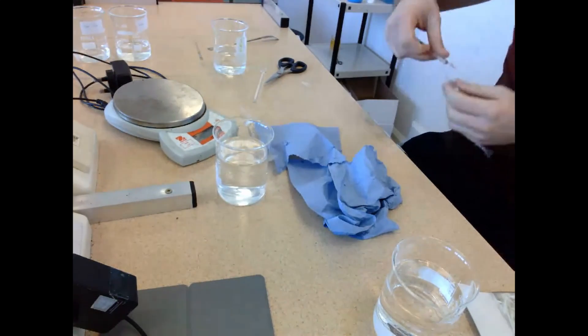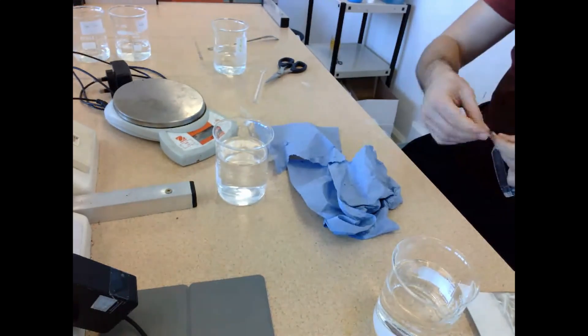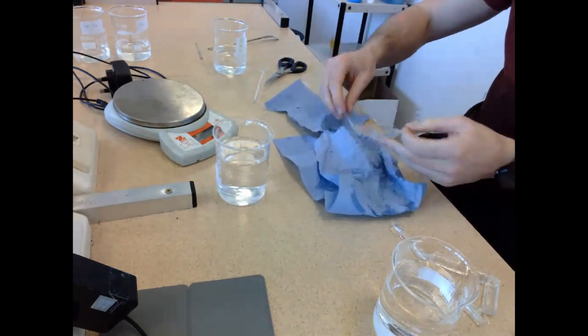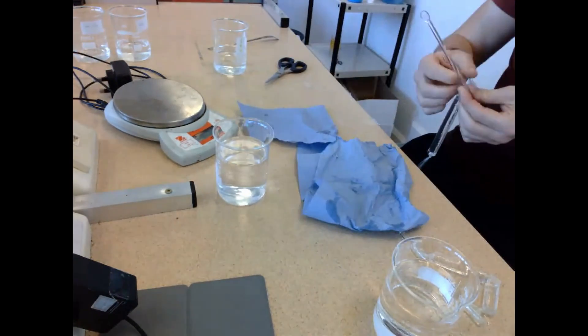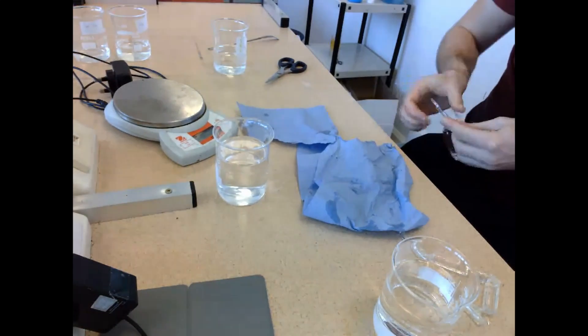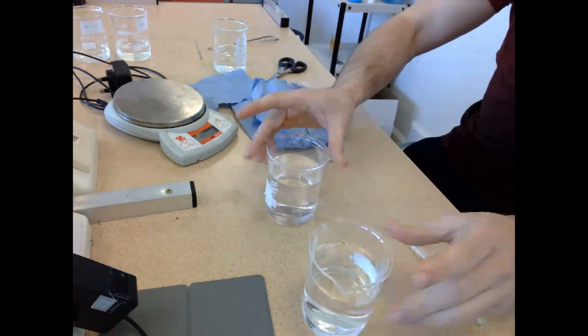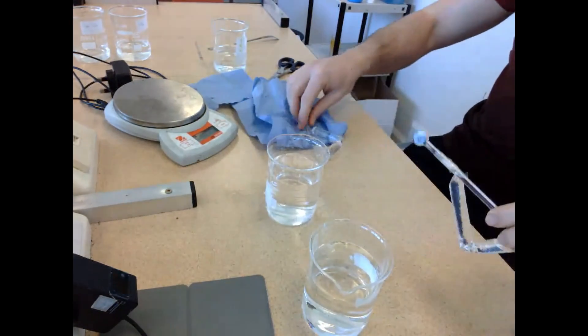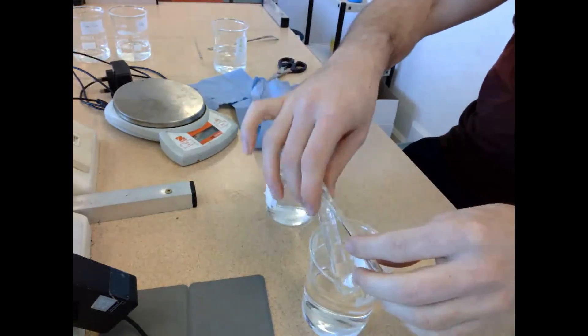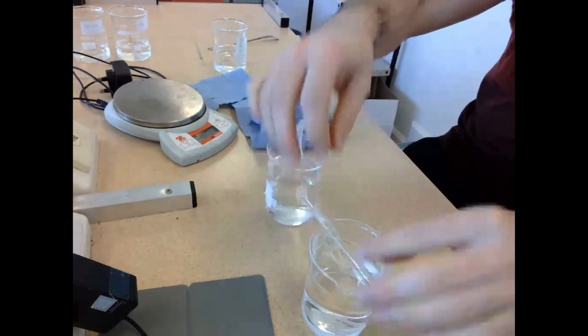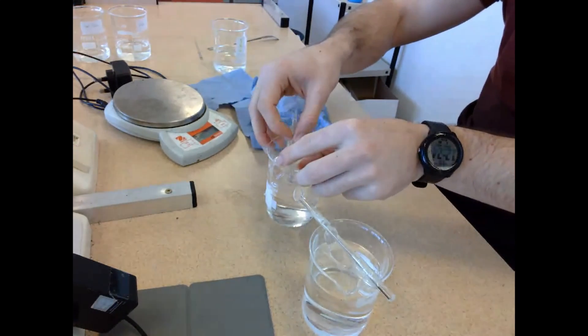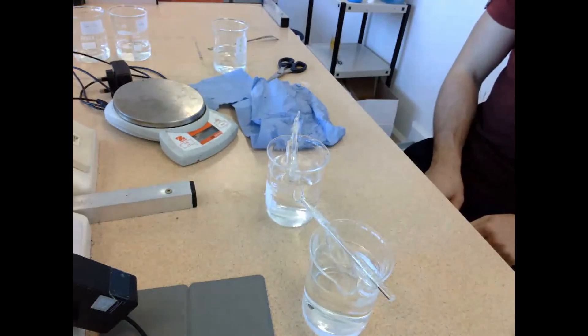The glass rods are going to sit across the top of the two beakers you can see in the foreground there, which will just allow for the visking tubing to be submerged, which will allow for movement of water - osmosis, if it's going to occur. I then placed them into those two beakers of water, ensuring that the visking tubing was submerged in the water, and I left both these for 15 minutes.